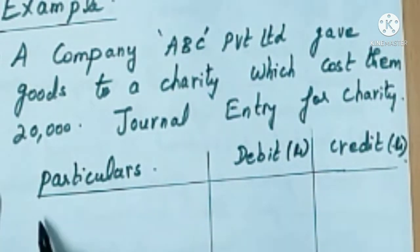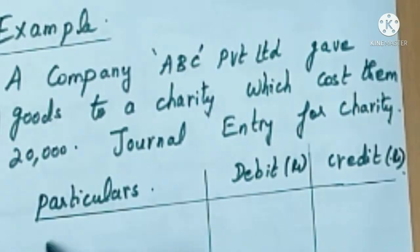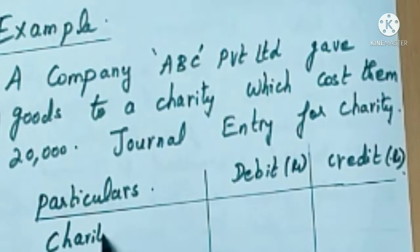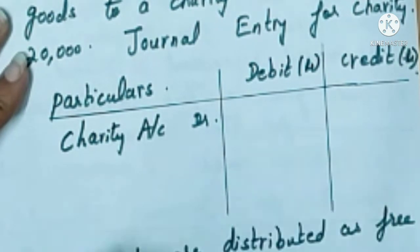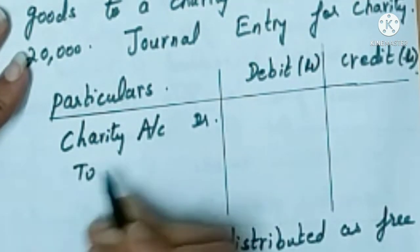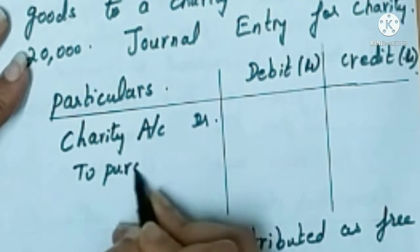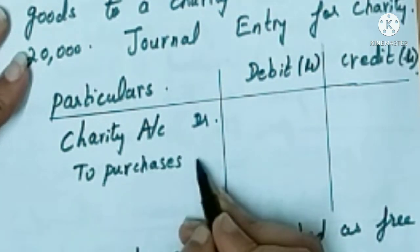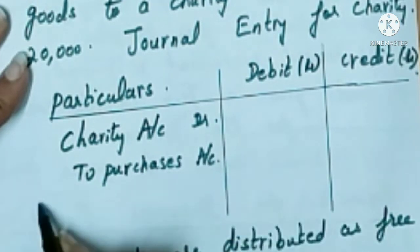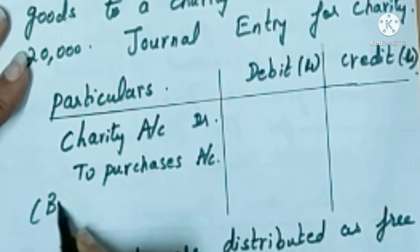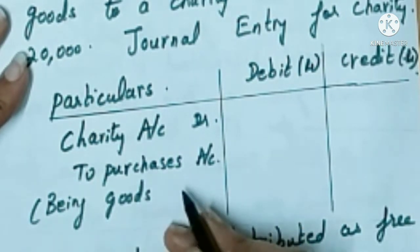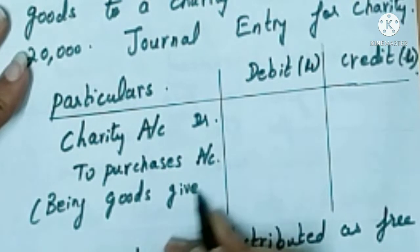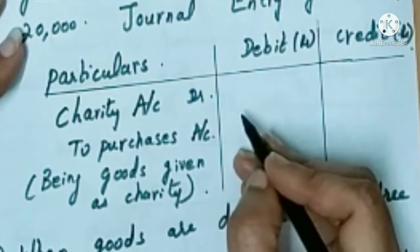Let's write the journal entry for charity given. Charity account debited to purchase account. Narration: being goods given as charity. Amount is rupees 20,000.